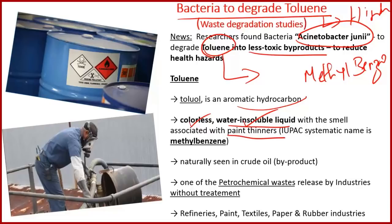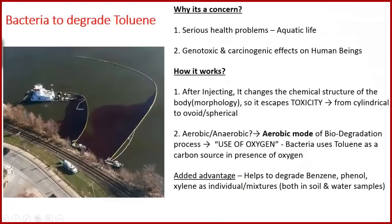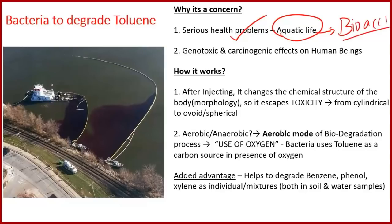Because of its water insolubility, toluene is used in paint thinners and is also a byproduct of crude oil processing. It is found in petrochemical waste released by refineries, paint and textile industries, and paper and rubber industries without treatment. This compound is associated with serious health problems for humans and aquatic life; when consumed by humans, it causes bioaccumulation and is considered carcinogenic.